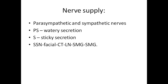Coming to nerve supply — both parasympathetic and sympathetic. Stimulation of the parasympathetic nerve causes watery secretion from the submandibular salivary gland, whereas stimulation of the sympathetic nervous system causes sticky, mucoid (gelidic) secretion. The parasympathetic control is more dominant in stimulating the gland.